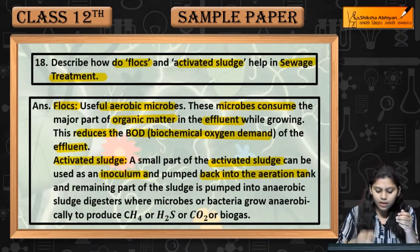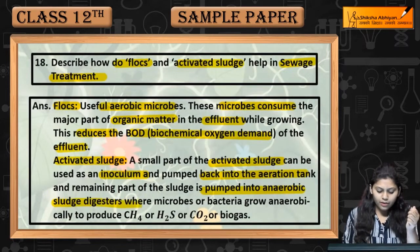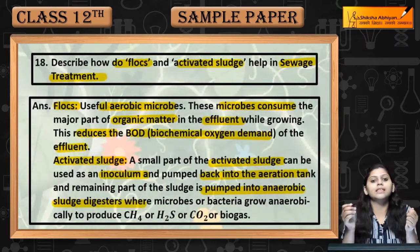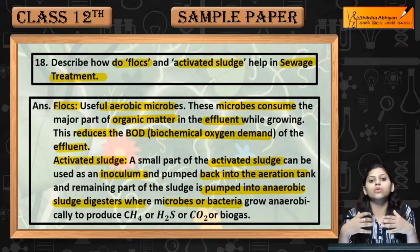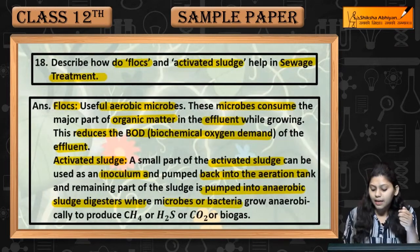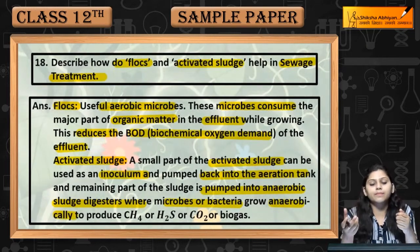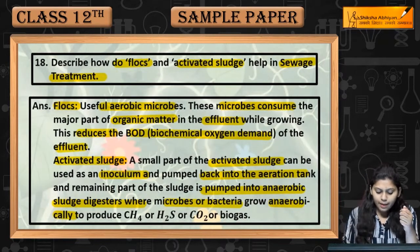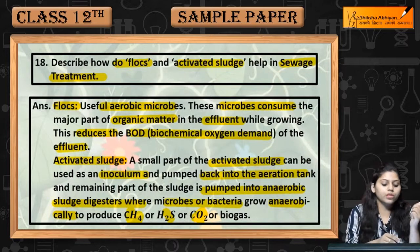The remaining part of the sludge is pumped into an anaerobic sludge digester, where microbes and bacteria grow anaerobically and produce biogas. Biogas consists of gases such as methane, H2S, and CO2. This was question number 18.